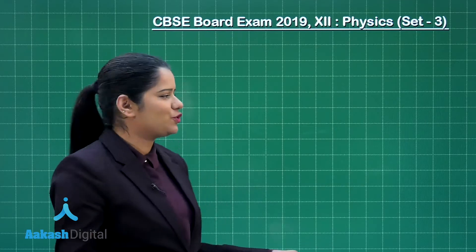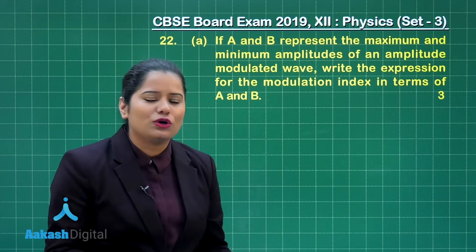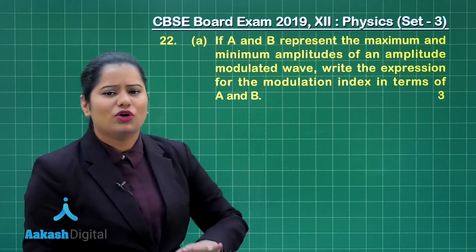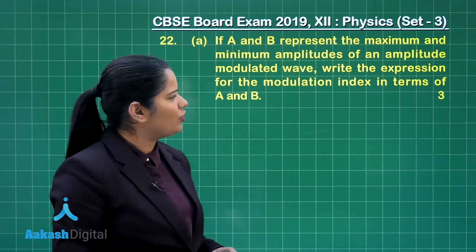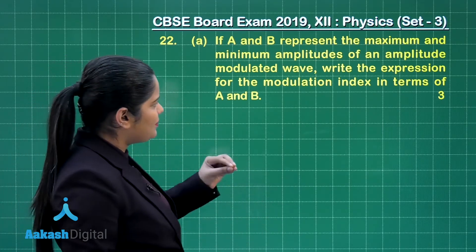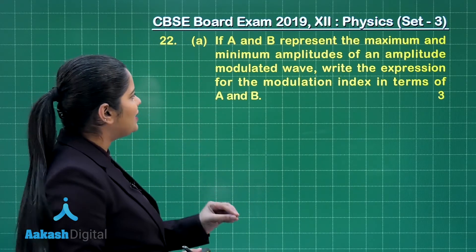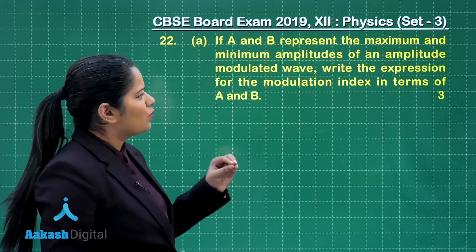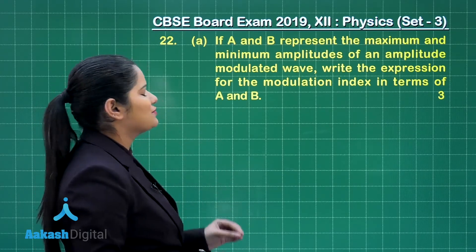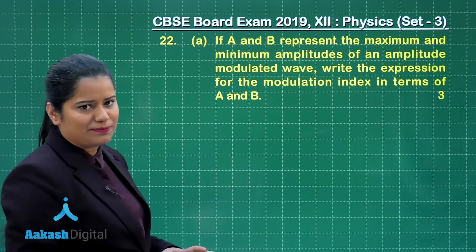Let us have our discussion for question number 22. This question is also for three marks and it has two parts, A and B. You will be getting one and a half marks for each part. Part A of the question says that if A and B represent the maximum and the minimum amplitude of an amplitude modulated wave, write the expression for the modulation index in terms of A and B.